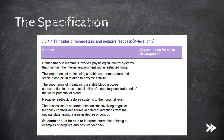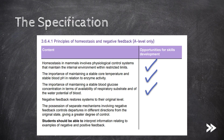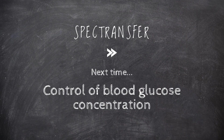That would be the principles of homeostasis and negative feedback covered. We've covered how homeostasis in mammals involves physiological control systems that maintain the internal environment within restricted limits, the importance of maintaining a stable core temperature and stable blood pH in relation to enzyme activity, and the importance of maintaining a stable blood glucose concentration in terms of availability of respiratory substrate and water potential of the blood. We've also covered negative feedback and how separate mechanisms give a greater degree of control, as well as a bit on positive feedback. Next time, we will be covering the control of blood glucose concentration.